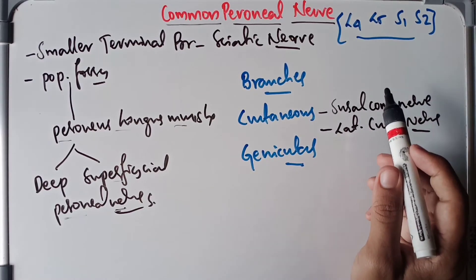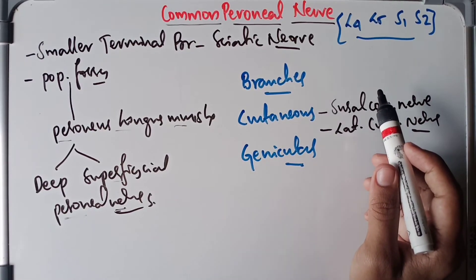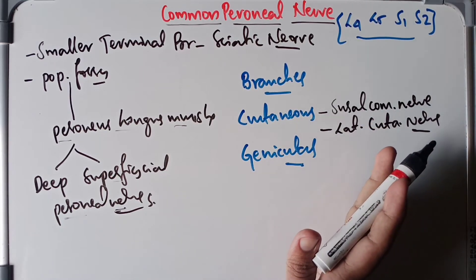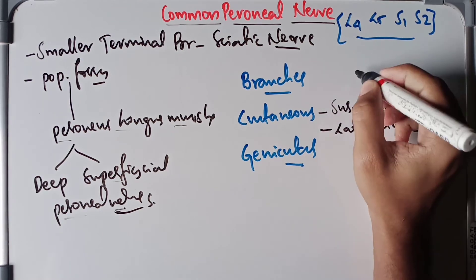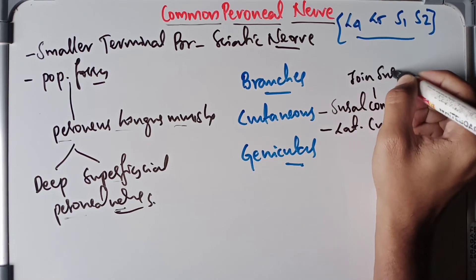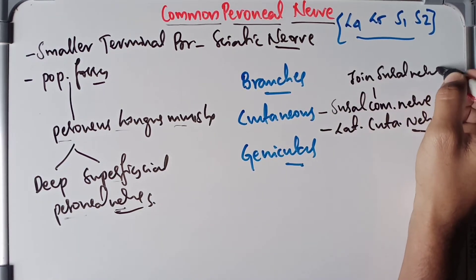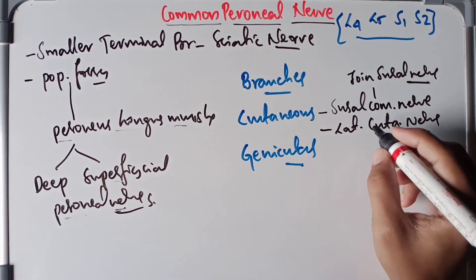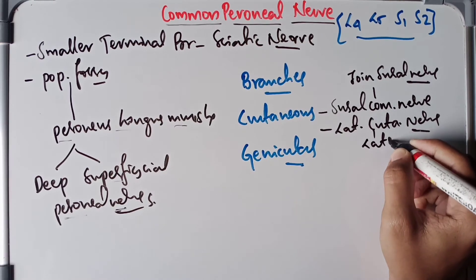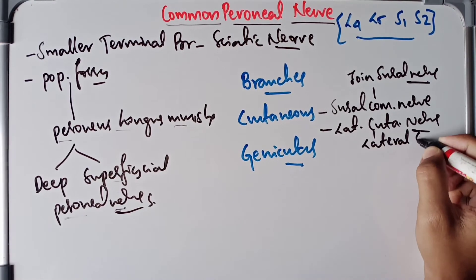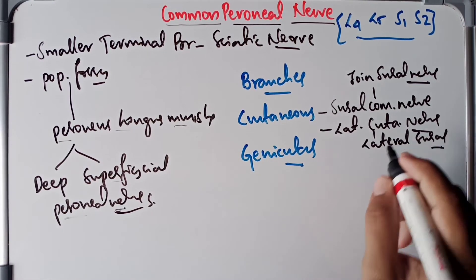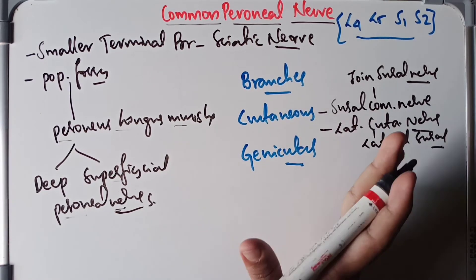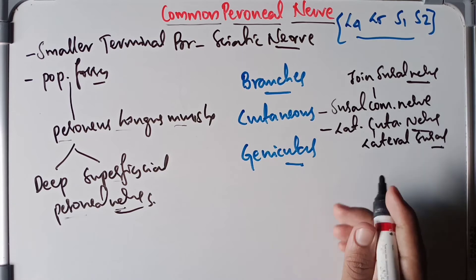The sural communicating nerve arises opposite to the head of the fibula, and after crossing superficially to the lateral head of the gastrocnemius, it joins the sural nerve. When it comes to the lateral cutaneous nerve, it is also called the lateral sural nerve, and it arises from the deep face of the skin and supplies the lateral side of the leg.